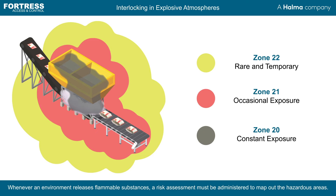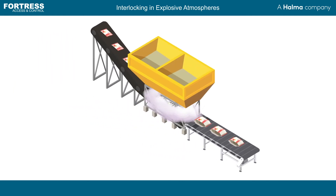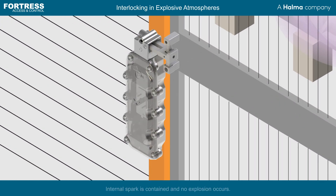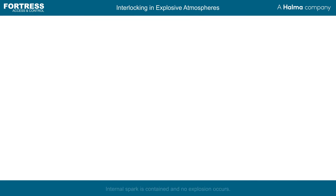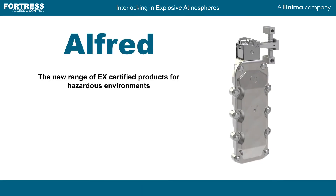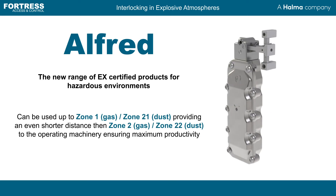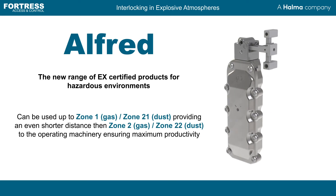The Fortress Alfred range has been designed and certified as a flameproof enclosure, guaranteeing that any internal spark will not ignite the atmosphere — no ignition, no explosion. The new Alfred range is designed to be installed local to the operating machine within the Zone 1/21 certification to maximize accessibility and maintain productivity.